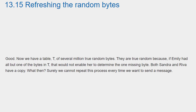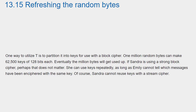Section 13.15: Refreshing the random bytes. We have a table T of several million true random bytes. They are true random because if Emily had all but one of the bytes in T, that would not enable her to determine the missing byte. Both Sandra and Reva have a copy. One way to utilize T is to partition it into keys for use with a block cipher. One million random bytes can make 62,500 keys of 128 bits each.